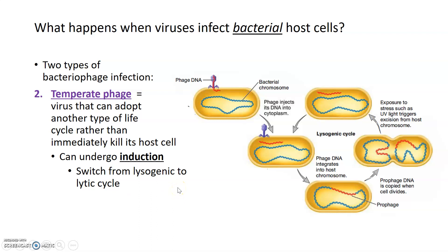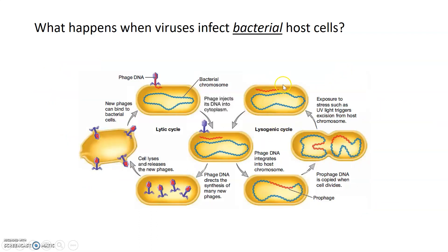The transition from the lysogenic to the lytic cycle involves a process called induction. This switch is usually triggered by exposure to stress or DNA-damaging events, such as UV light, which causes the viral genome to be excised — cut out — from the bacterial chromosome. Once the viral genome is excised, it can be replicated and used to make viral proteins and new virions, which ultimately lyse the cell. A temperate phage can enter the lysogenic cycle but also undergo induction and enter the lytic cycle, whereas a virulent phage can only follow the lytic cycle.